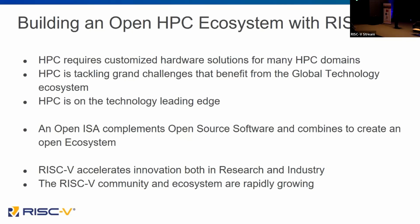The exciting thing about an open ISA is it complements an open source software ecosystem. By combining those together, we can create the open ecosystem. With open source software paving the way for a new, open ISA, RISC-V can basically be used to innovate and accelerate both research and industry. The RISC-V community is growing, so we're super excited to see all those things come together.